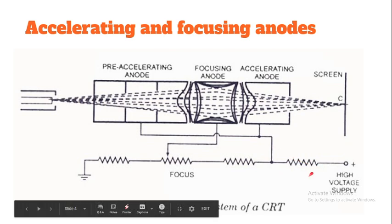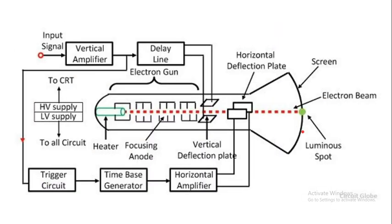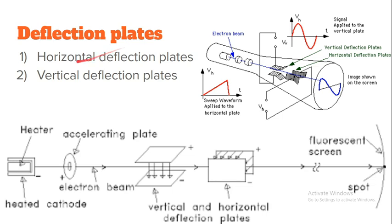We provide high voltages for supply and the pre-accelerating anode. We are looking at the delay line from the vertical plates, and we provide horizontal amplifiers from the horizontal deflecting plates. There are two types of plates: horizontal deflecting plates and vertical deflecting plates. Here we are looking at the heater and electrons.